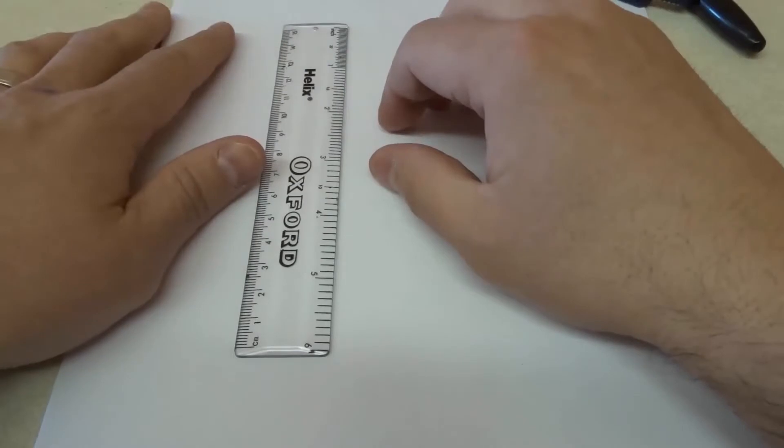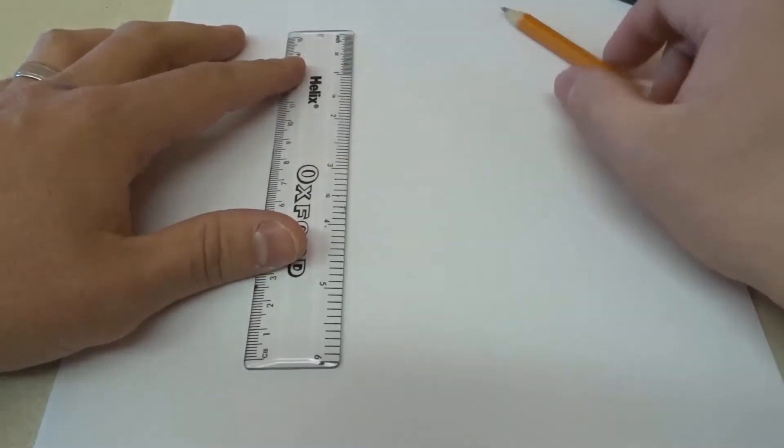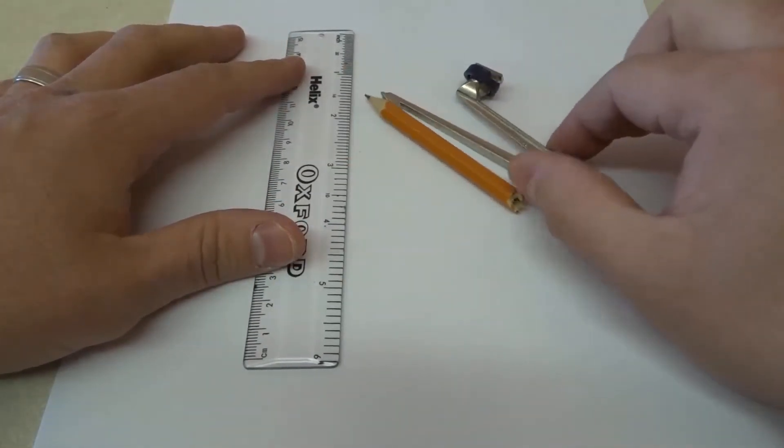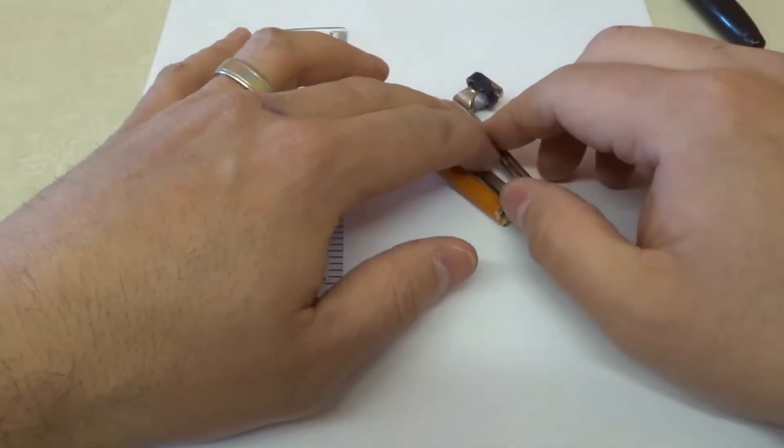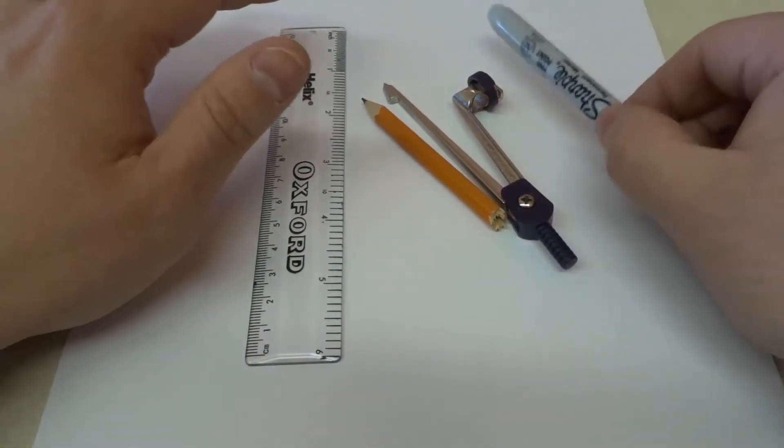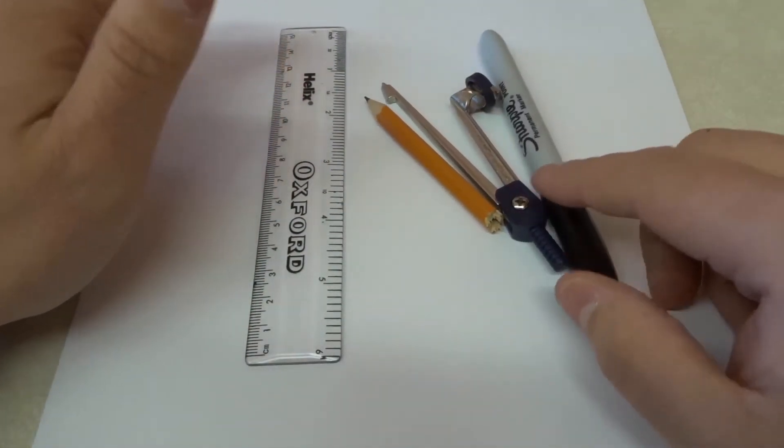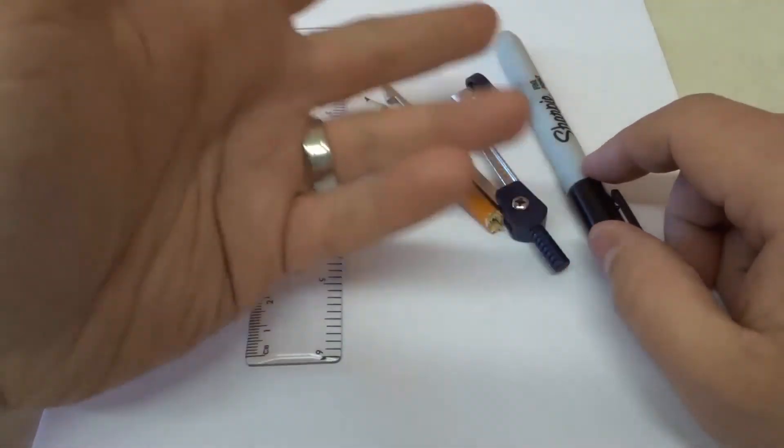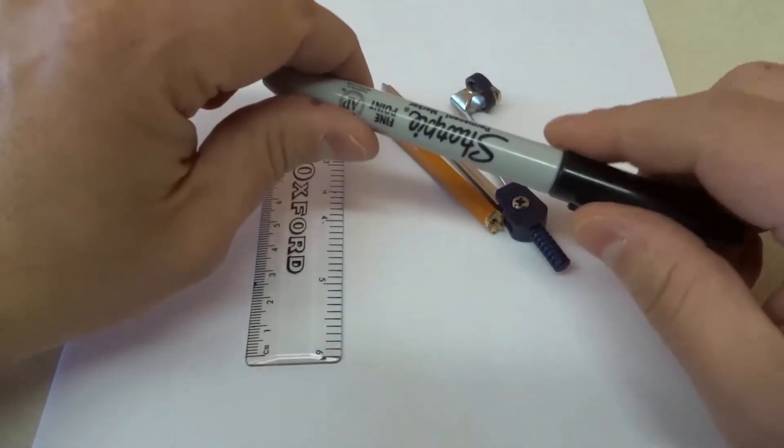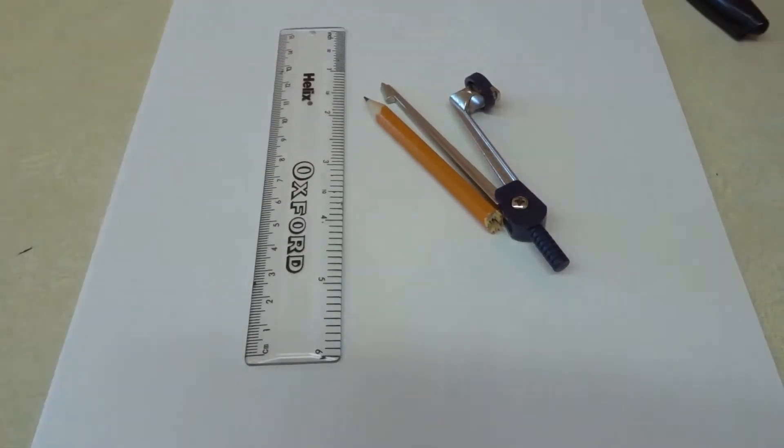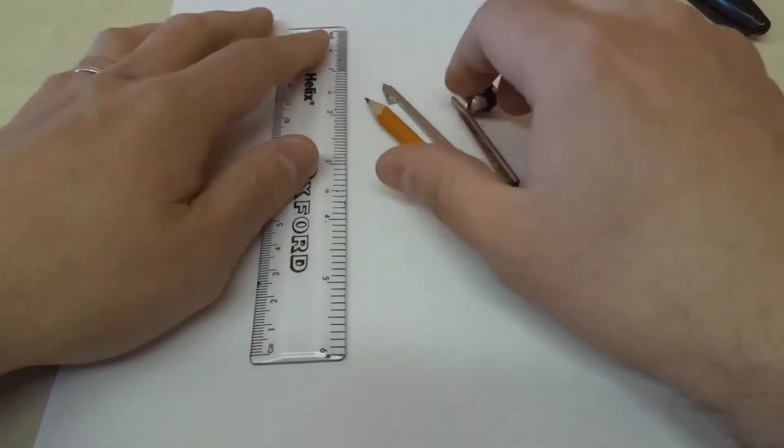All that you need to draw a perfectly shaped heart is a ruler, a pencil, a math compass (I apologize, I was going to call this a protractor), and a marker to outline at the end. You can also use a pencil crayon or crayon or anything else, just something to separate it from the pencil that you're going to be using to draw the rough outline. So let's get right into the video.